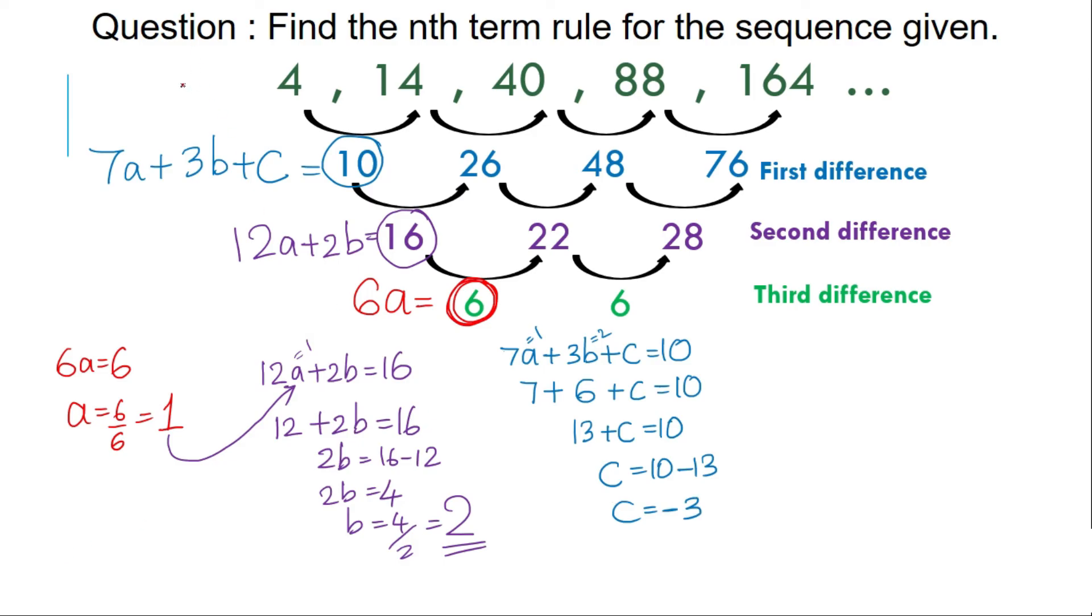My last step is to find d, and for d I'll be using the equation a plus b plus c plus d is equal to the first term of the sequence. So I have a plus b plus c plus d equal to 4. Substituting: 1 plus 2 minus 3 plus d gives me 4. This is 3 minus 3 is 0 plus d is 4, and my value for d is equal to 4.